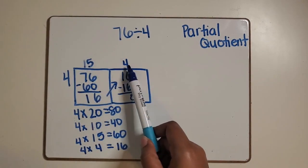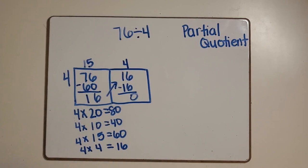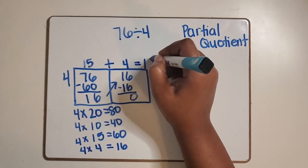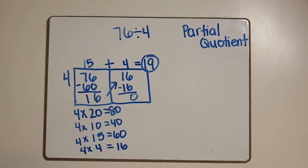We now have two partial quotients, 15 and four. We need to join them together or add them and that will give us 19. So Ms. Andrews will have 19 water bottles going to each of the fourth grade classes.